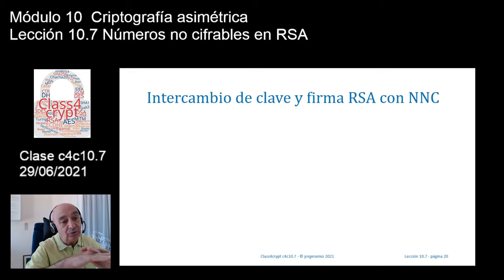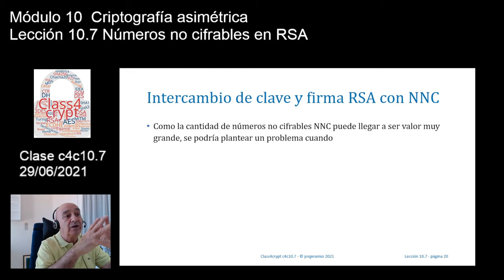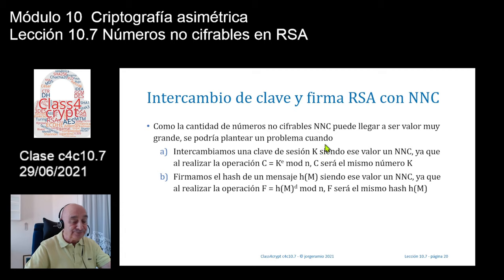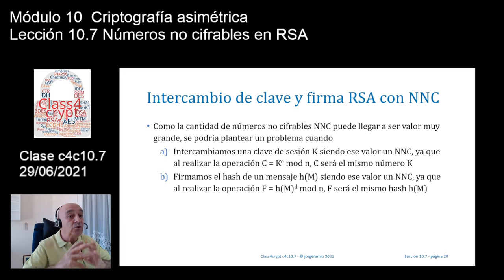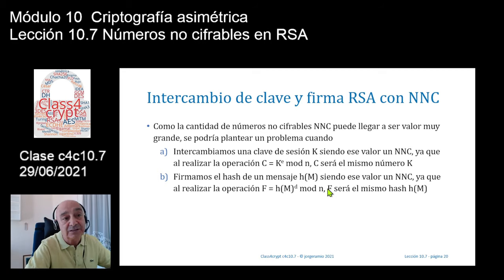Dejando de lado el concepto de que en sistemas reales no es ninguna preocupación, ¿qué sucedería si al hacer un intercambio de clave o una firma digital con RSA, por casualidad caemos en números no cifrables? Si yo cifro un número secreto K y resulta ser no cifrable, lo cifro con tu clave pública, lo reduzco al módulo y me sale el mismo número. Y si firmo digitalmente un documento, hago la función hash, lo cifro con mi clave privada y me sale el mismo valor del hash.